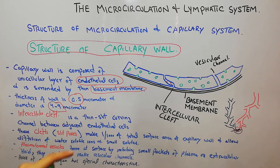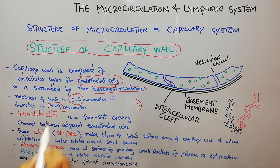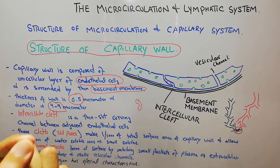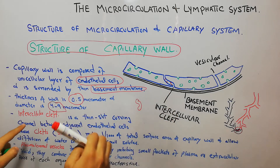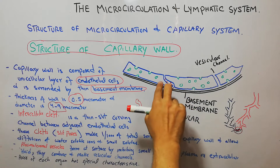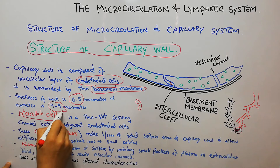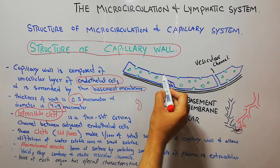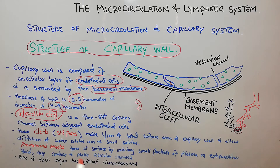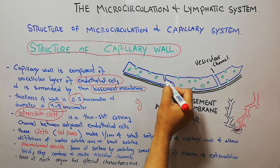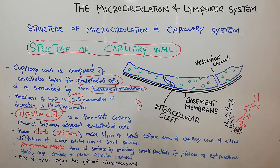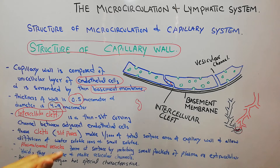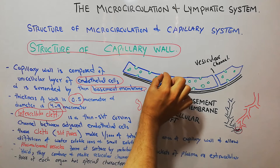This diameter of 4 to 9 micrometers is sufficient to allow just one red blood cell to move through at a time — it is so small that only one cell can pass. At the junction between adjacent endothelial cells we have the intercellular cleft. It is basically a thin, curving slit channel between adjacent endothelial cells. Between these slits we also have some proteins that help in anchoring or attachment of the endothelial cells.